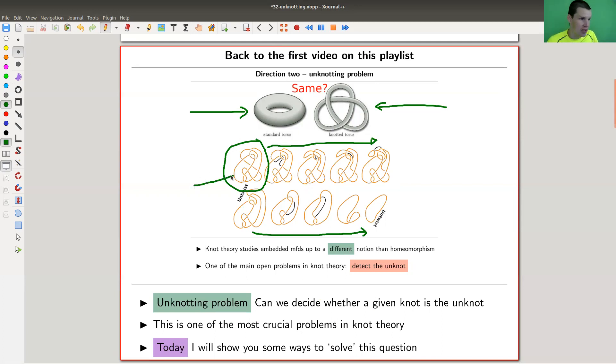This knot here is actually the unknot, although you really can't tell by looking at it. The problem is, can we decide? You give me a knot, and you ask me, is this the unknot? I would need to decide and tell you yes or no with 100% certainty. Can I do that in some way?